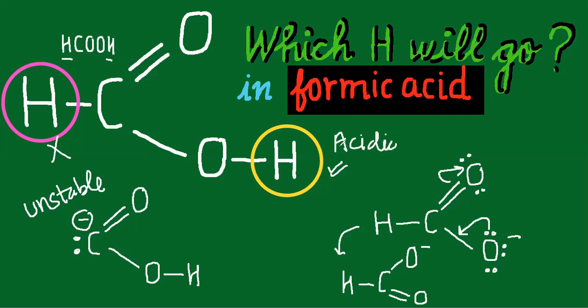So formic acid is a monoprotic acid. And after the removal of H-plus, the stability of the anion decides the acidity of the hydrogen. So that's an amazing concept. Basic of organic chemistry.